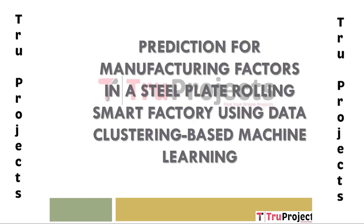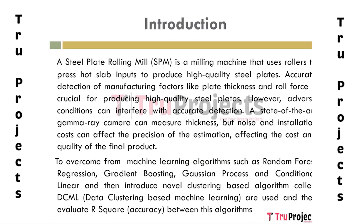Welcome to True Projects. In this video we are going to explain prediction for manufacturing factors in a steel plate rolling smart factory using data clustering based machine learning. A steel plate rolling mill uses rollers to press hot slab inputs to produce high quality steel plates. Accurate detection of manufacturing factors like plate thickness and roll force is crucial. Machine learning algorithms like random forest regression, gradient boosting, Gaussian process, and conditional linear are introduced, along with a novel cluster-based algorithm called DCML, which is data clustering based machine learning.